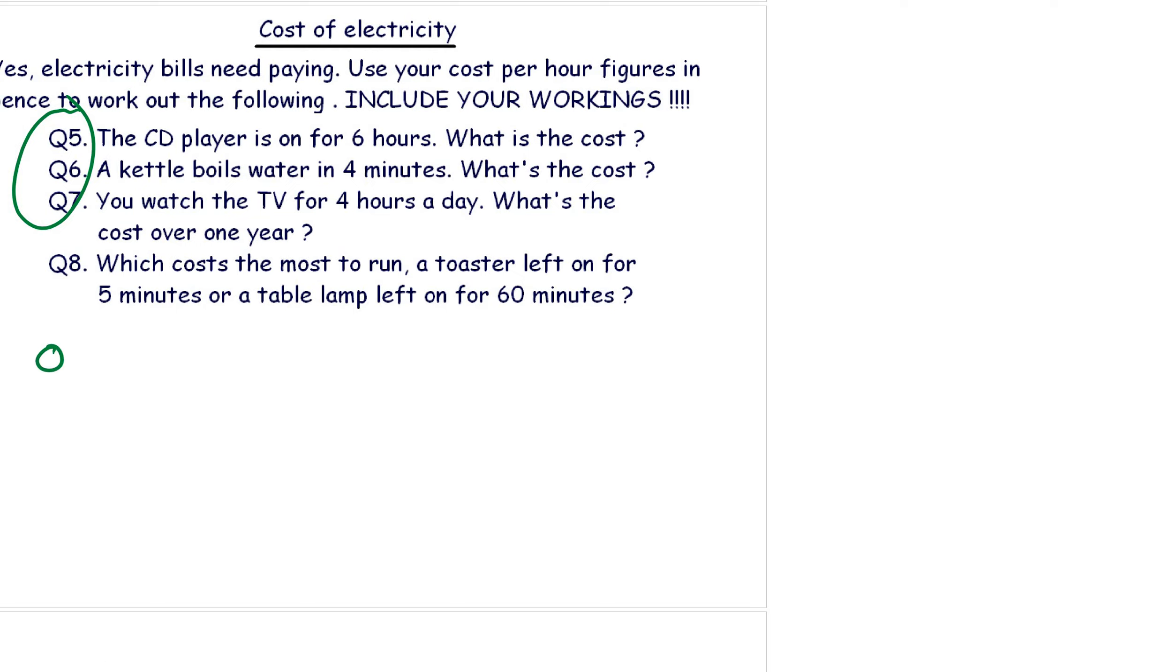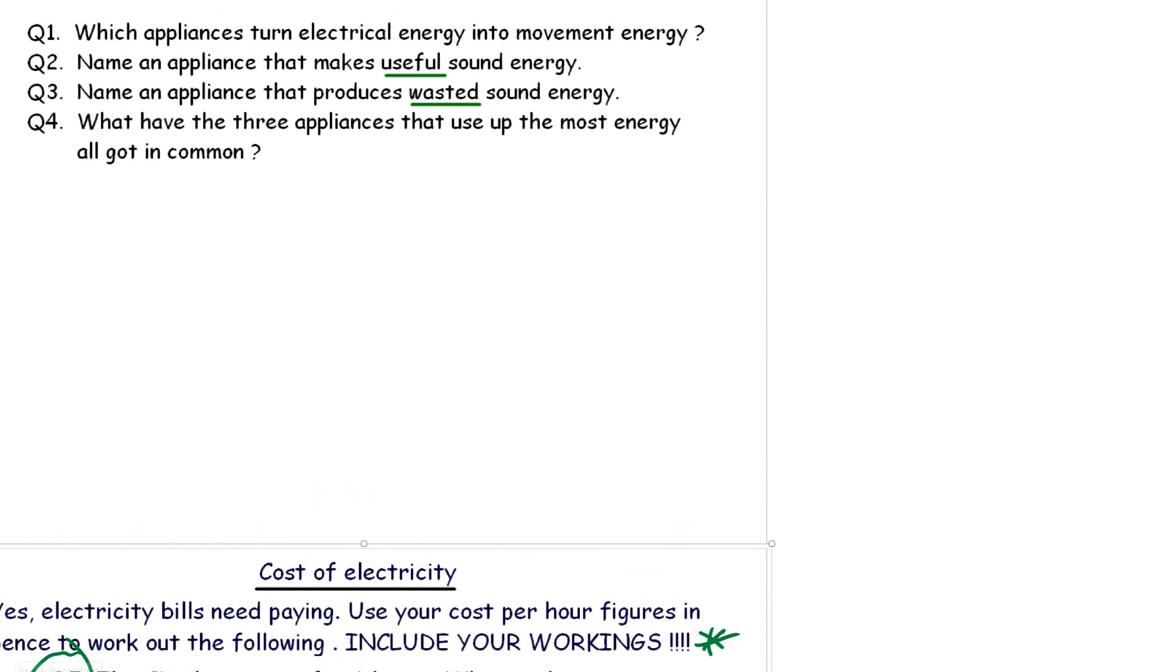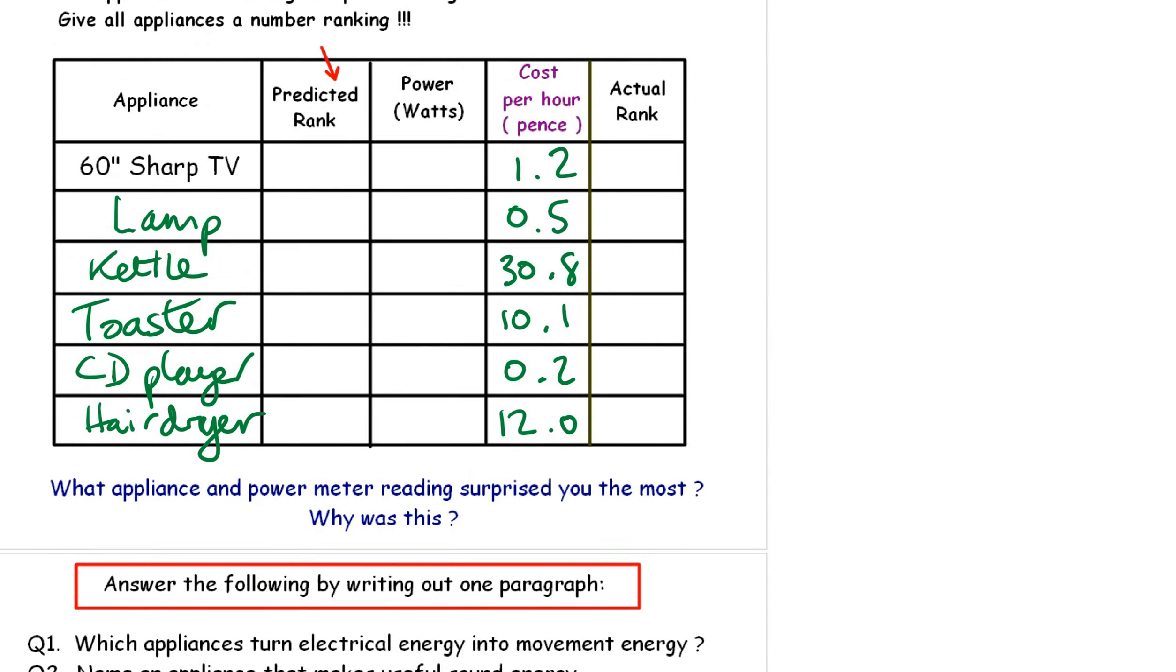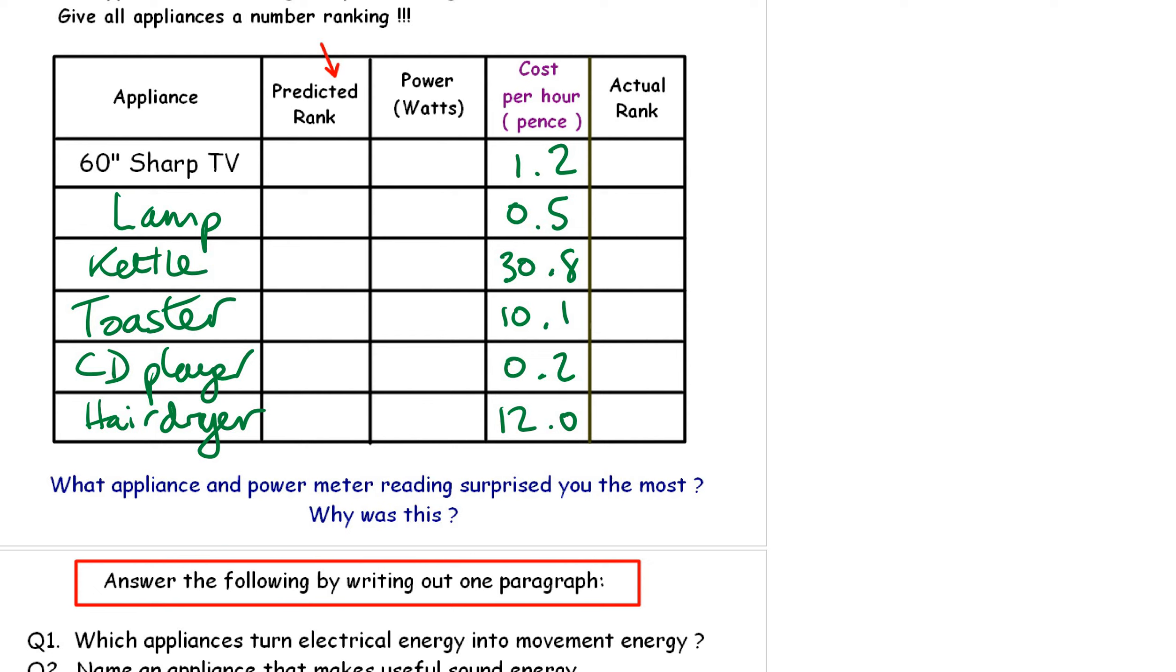Okay, here we go. Question five: you got to be on your toes here. The cost of electricity bills need paying. Use your cost per hour figures in pence to work out the following. Include your workings. So the CD player is on for six hours. What is the cost? Well, it's on for six hours, but how much is the cost per hour? Let's just go back up. The CD player costs 0.2 pence per hour.